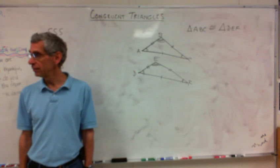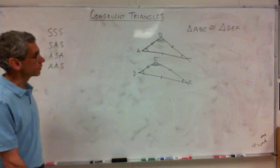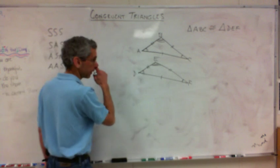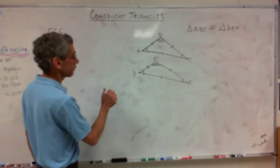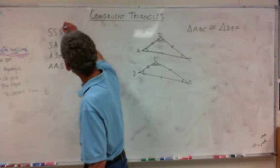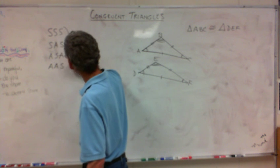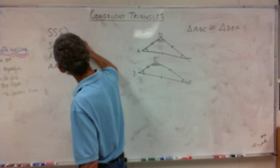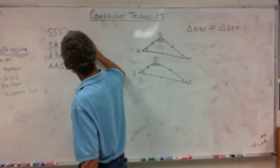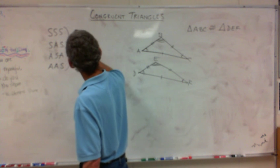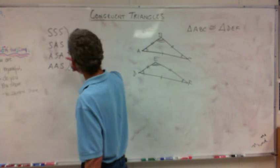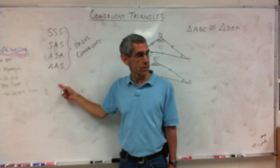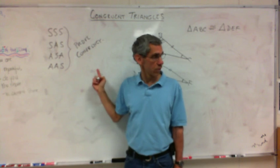You with me? All right. Let's say I was not given all this information. These are all things that prove congruency. So if these things exist, the triangles are congruent.